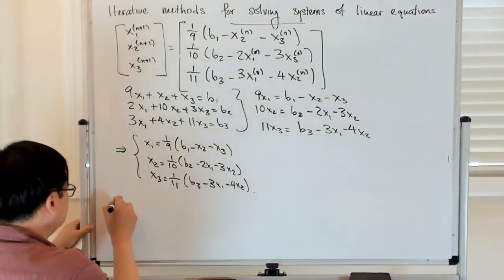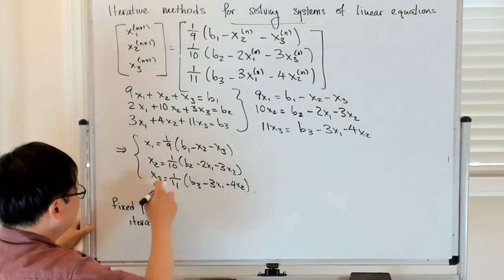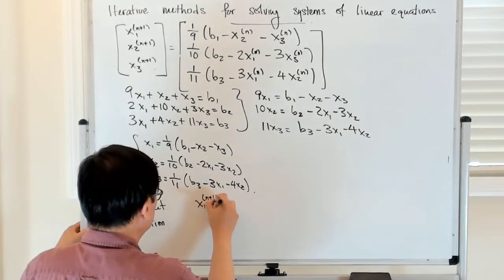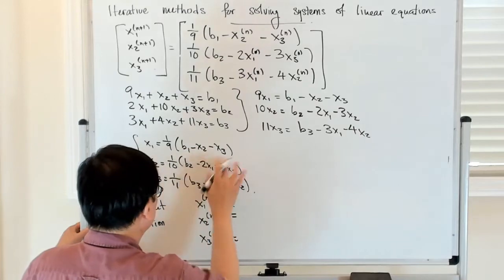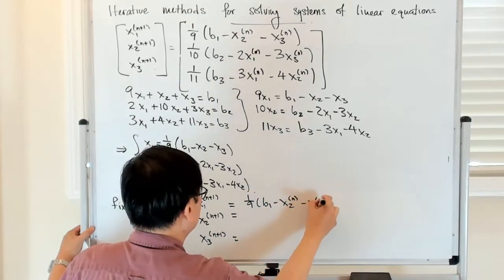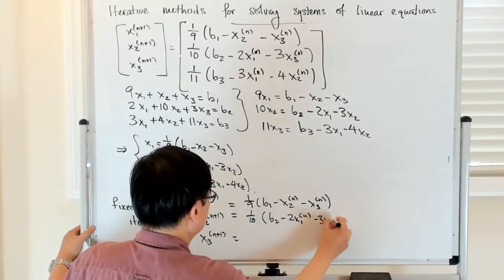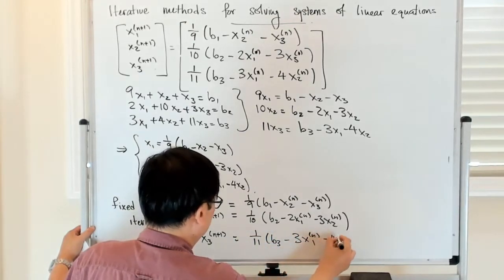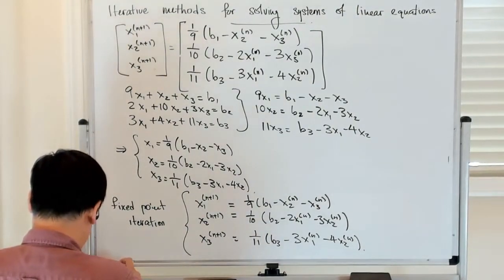The fixed point iteration for this is that everything on the left involves the n+1 term, so X1_{n+1}, X2_{n+1}, X3_{n+1}, and everything on the right you think of as being associated with the nth iterate: (1/9)(B1 - X2_n - X3_n), (1/10)(B2 - 2X1_n - 3X2_n), and (1/11)(B3 - 3X1_n - 4X2_n). So this is what is called the Jacobi iteration.